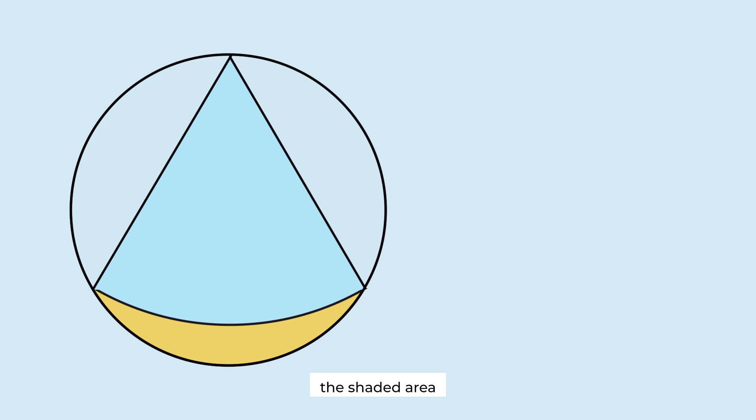The shaded area is the area of this figure minus the area of the sector. And the area of this figure is the area of the equilateral triangle plus the area of the segment. Calculate this value.